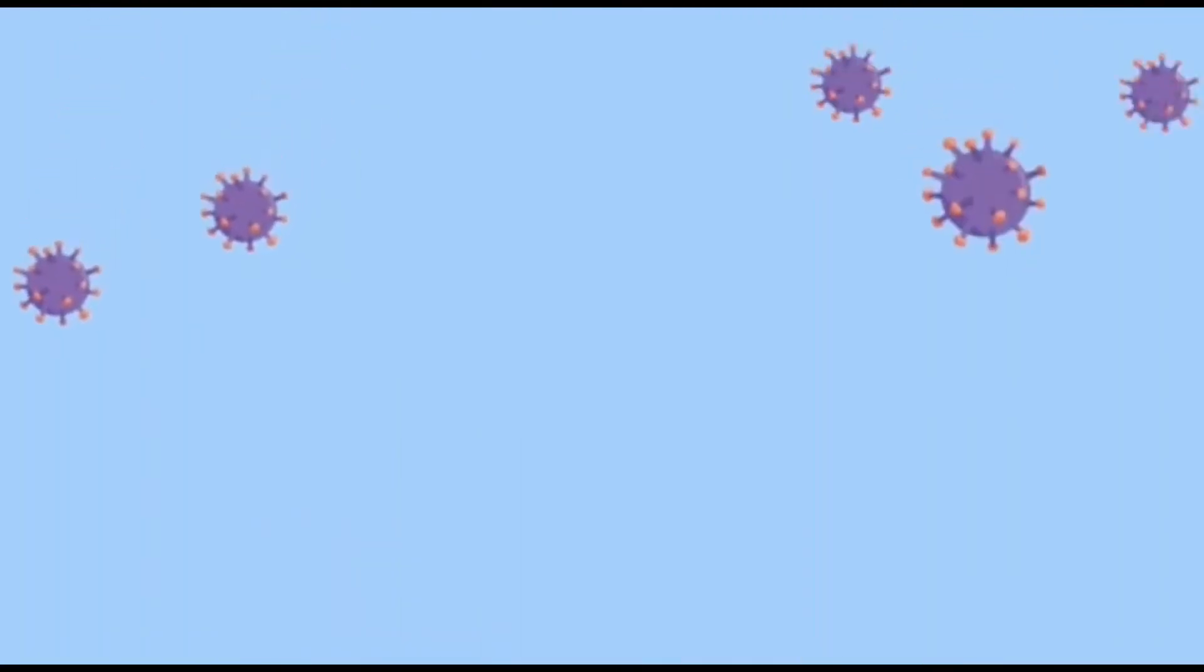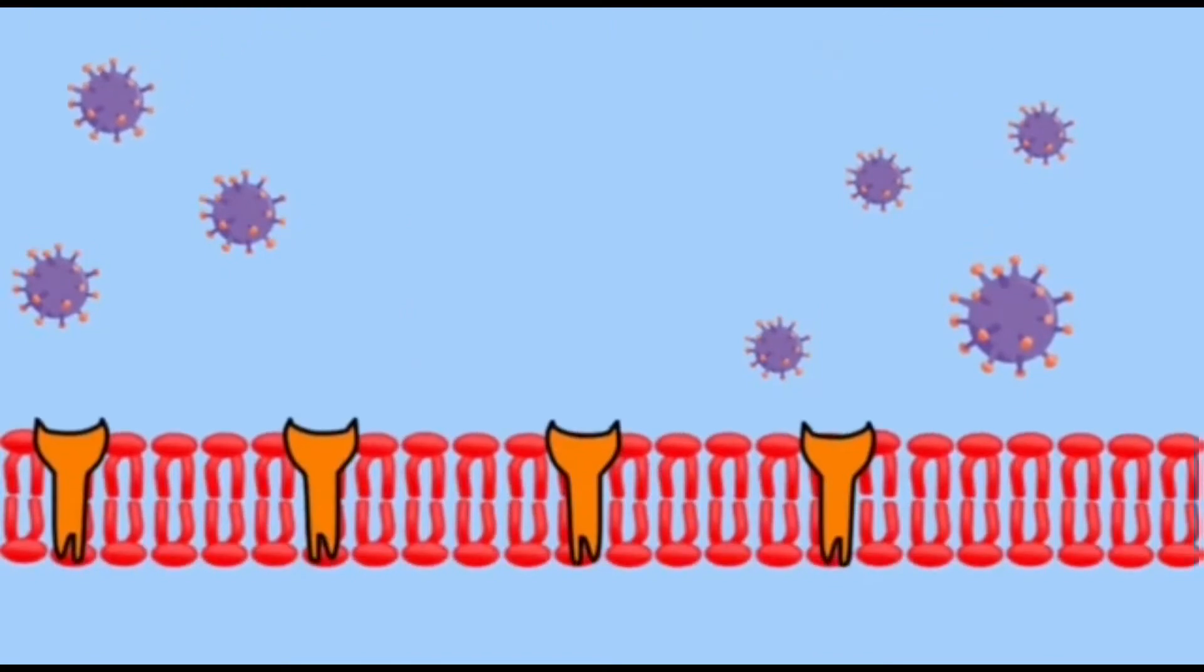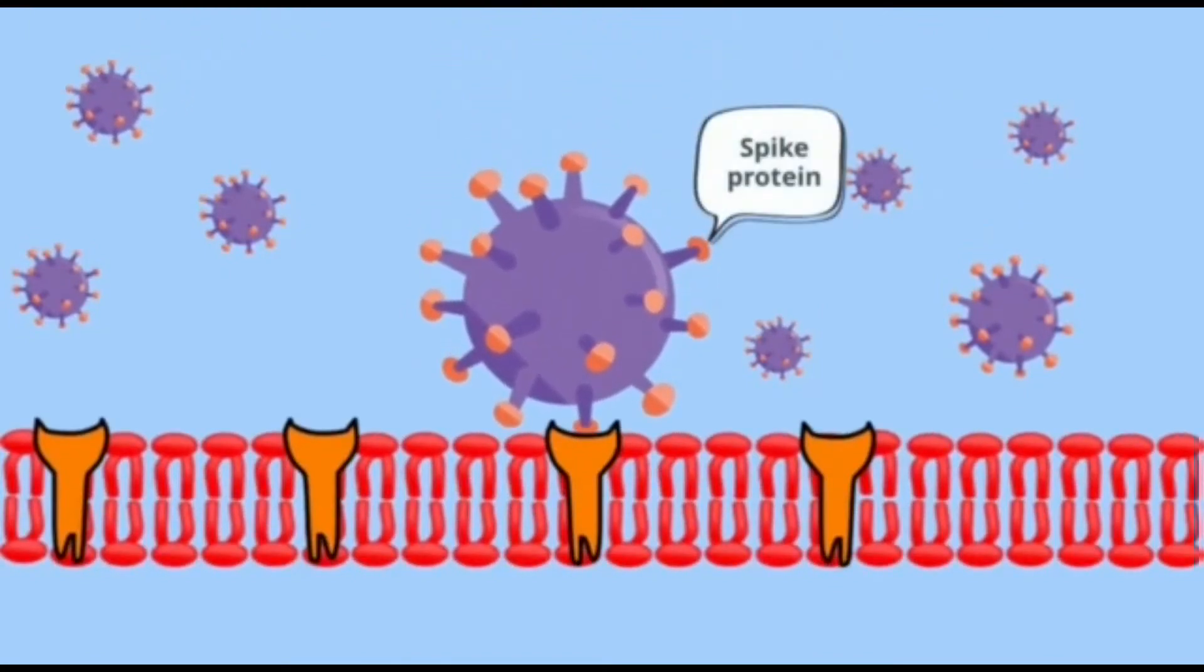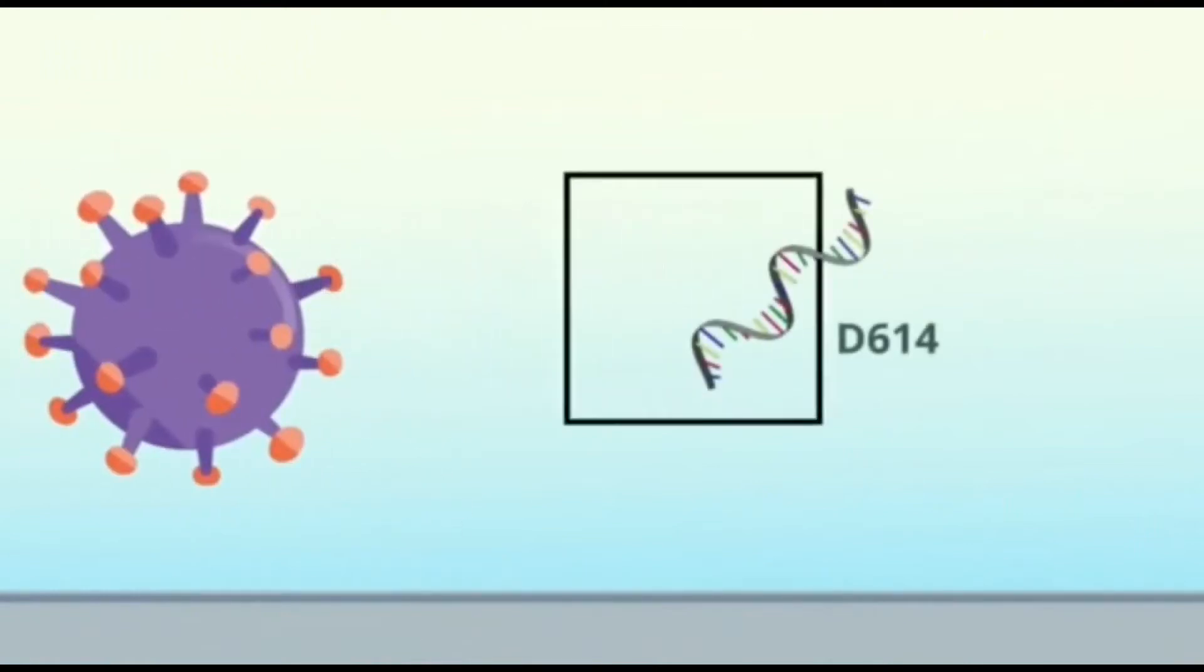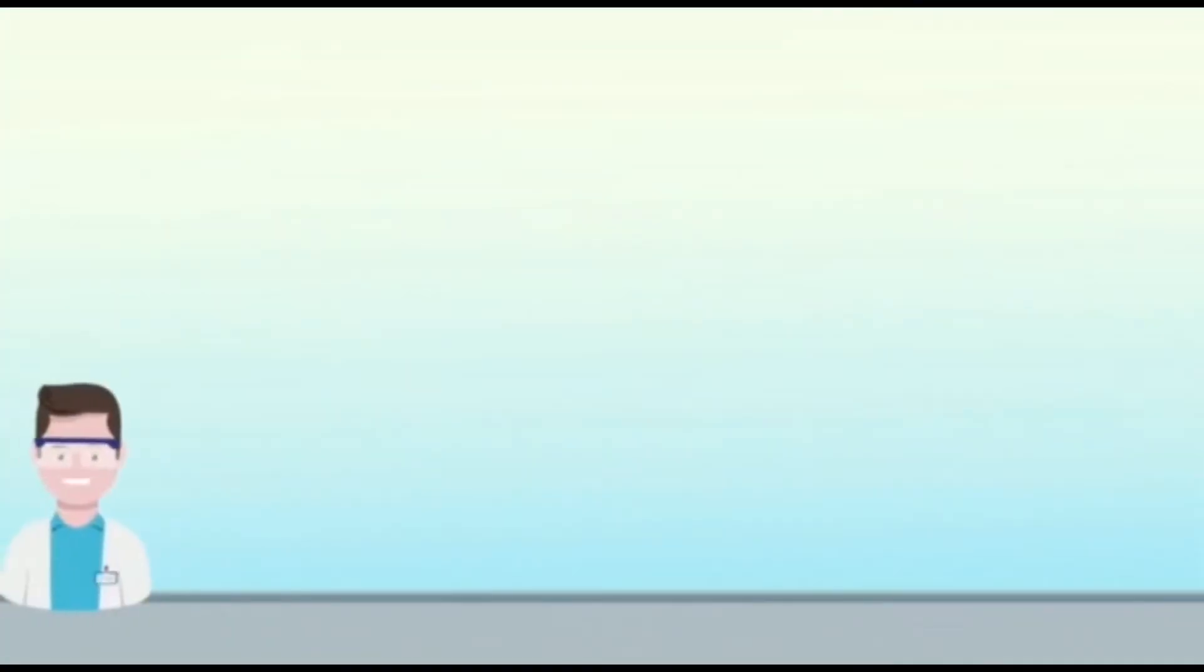This virus mediates an infection by using its spike proteins that will bind to the receptor known as angiotensin-converting enzyme 2 or ACE2 on the host cells. During the early epidemic in Wuhan, the spike protein of the virus was encoded as D614. However, a new variant was identified which is known as G614. This mutation is then called as D614G.